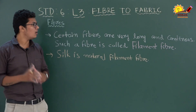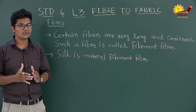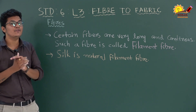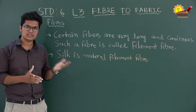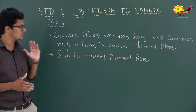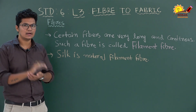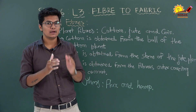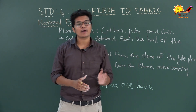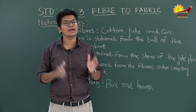Certain fibers are very long and continuous — these are called filament fibers. One natural filament fiber is silk. All man-made, or synthetic, fibers are filament fibers. They are cut into small sizes and spun to make yarn. The fibers that we get from nature are called natural fibers.